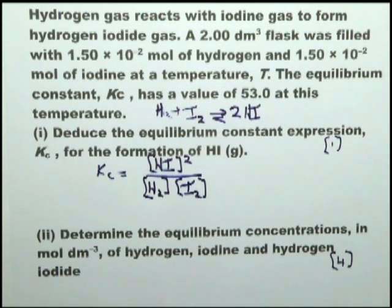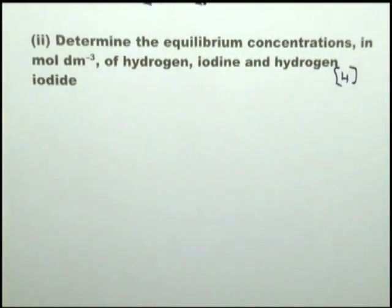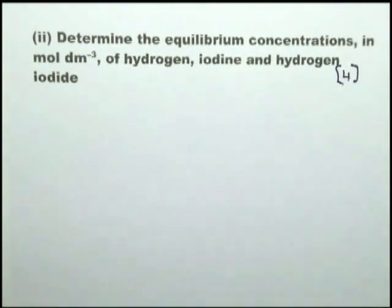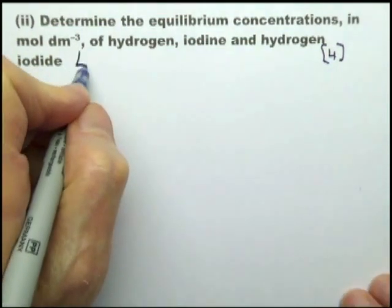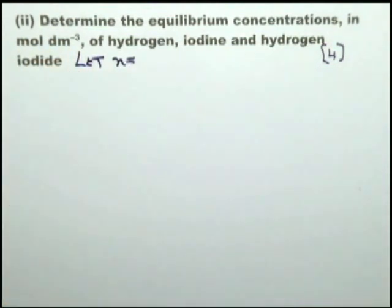Now let's determine the equilibrium concentrations for hydrogen and iodine and hydrogen iodide. This is where you have to make your first decision. Something has to be an unknown, x. And let x equal - the question is, what is going to be the unknown? Is it going to be the concentration of hydrogen at equilibrium, concentration of iodine at equilibrium, or the concentration of hydrogen iodide at equilibrium? Making that kind of decision can be both time consuming and nerve wracking. And if you make the wrong one, you will end up with a quadratic equation which you may not be able to solve.